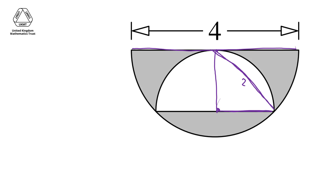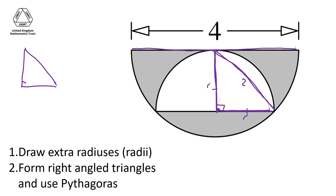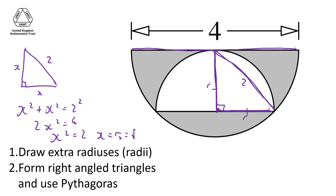Inside the smaller semicircle, I've created a right angle triangle — and not just any right angle triangle. The two shorter sides are the same because they are both the radius of the small circle, so they have to be equal. Using Pythagoras: this side is 2, and the two equal sides are both x, where x is the radius of the small circle. So x squared plus x squared equals 2 squared, giving 2x squared equals 4, x squared equals 2, and x — the radius of the small semicircle — equals the square root of 2.